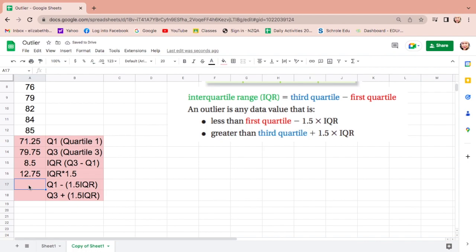Then Q1 minus 1.5 IQR. Equals, Q1 is 71.25, click, minus, IQR times 1.5, 12.75, enter.